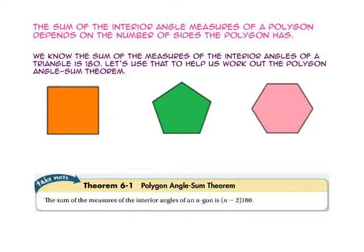The sum of the interior angle measures of a polygon depends on the number of sides the polygon has. We know the sum of the measures of the interior angles of a triangle is 180.